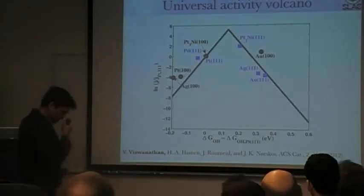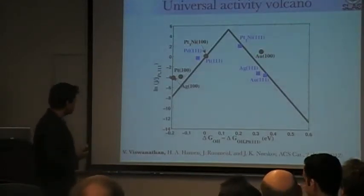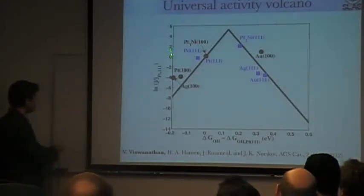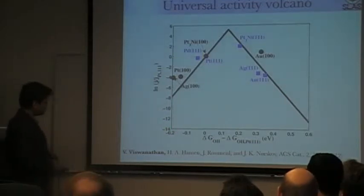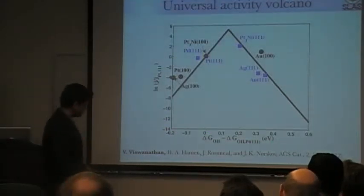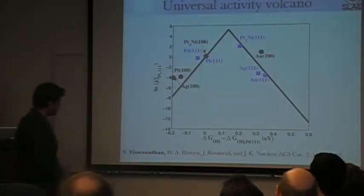So if the dots fall on the line, then our predictions are good. But what is important to note is these are many orders of magnitude. This is on a log scale. So these are many orders of magnitude in current, and actually many orders of magnitude even in binding energy. What is seen is platinum one-on-one is good, but you can make it better by weakening the OH binding.